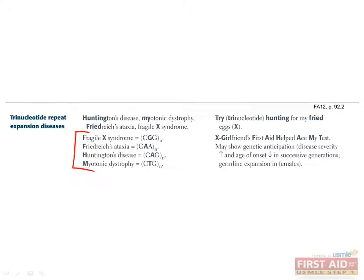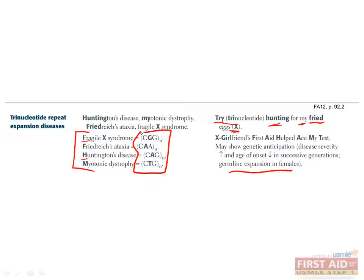This is a list of the most commonly tested trinucleotide repeat disorders. You can remember them using the mnemonic 'Try Hunting For My Fried Eggs,' which represents trinucleotide repeats, Huntington's, myotonic dystrophy, Friedreich's ataxia, and Fragile X syndrome. They can be inherited in a variety of ways — for example, Huntington's is autosomal dominant and Fragile X is X-linked recessive. The number of repeats expands in the female germline, so when inherited from a female parent they exhibit anticipation, meaning the age of onset is earlier or the disease becomes more severe. You should memorize the actual trinucleotide repeats, since this may help you answer an exam question. The mnemonic 'Ex-girlfriend's first aid helped ace my test' can help you remember the middle letter in each repeat.